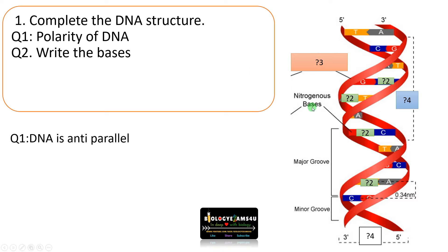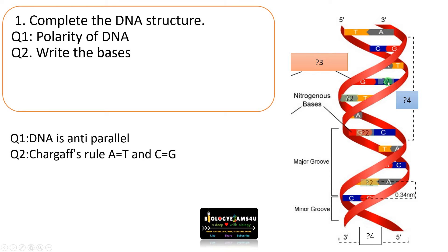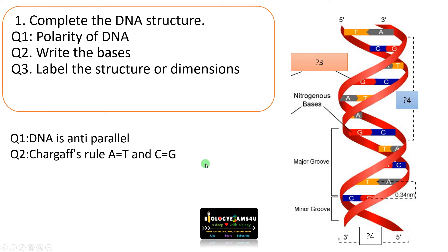The second question: write the bases. Here guanine is given as the second base. By Chargaff's rule, adenine always pairs with thymine and cytosine always pairs with guanine. So if it is G here, it will be C. If it is adenine, it will be thymine. Adenine bonds with thymine by two hydrogen bonds, whereas cytosine bonds with guanine by three hydrogen bonds.